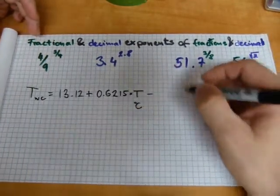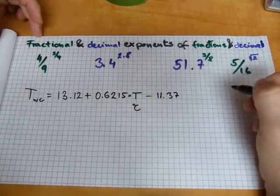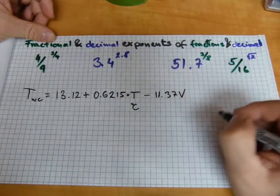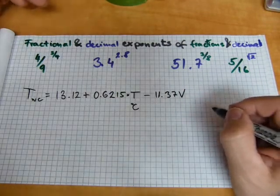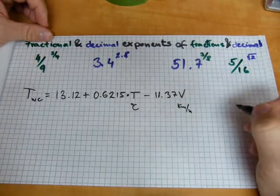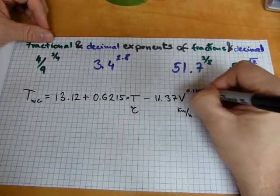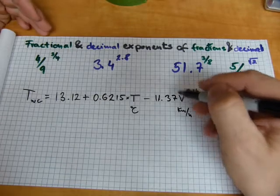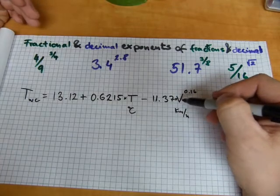Take away 11.37. Multiply it by the wind speed that's measured at the height of 10 meters. And it's in kilometers per hour wind speed. And this wind speed is to the power of 0.16. Don't ask me why. But here is your decimal number. That's a multiplication there. 11.37 times the wind speed.